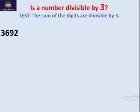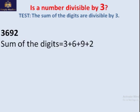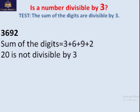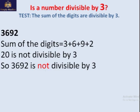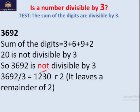Another number: 3692. Let's add the digits — that gives 20. Is 20 divisible by 3? No, so this number is not divisible by 3. There is a remainder left, confirming it's not completely divisible by 3.